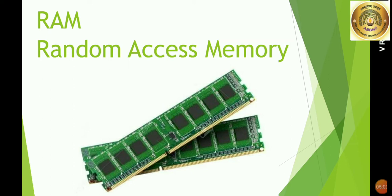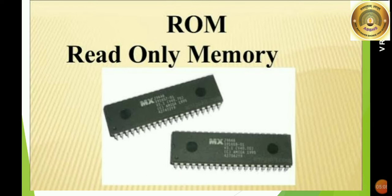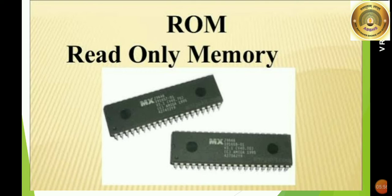Next is ROM. The full form of ROM is Read Only Memory. See this picture carefully. Read Only Memory is a permanent memory of the computer. Whatever files and folders you save will remain in the computer — that is ROM. It does not lose information when you switch off the computer, unlike RAM where unsaved information is lost.